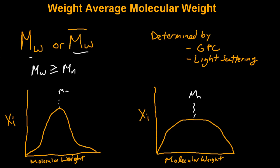On the left, there isn't a significant amount of higher molecular weight material. Whereas on the right, there is a greater amount of higher molecular weight chains. So as a result, the distribution on the right would have a greater weighted average molecular weight as opposed to the one on the left.